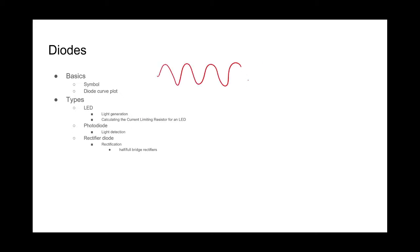Let's talk about rectifier diodes. Rectifier diodes are kind of like the muscly diodes — they're the heavy lifters of the diode world, used for high power applications such as rectification. If we have an alternating voltage and we want to convert it to a DC voltage, we need to do what's called rectification. My favorite are full bridge rectifiers, but you can also do half bridge rectifiers, which are only half as efficient.